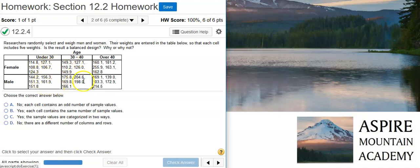So we see we have five samples for each of the cells in our table, so that means that we do have a balanced design.